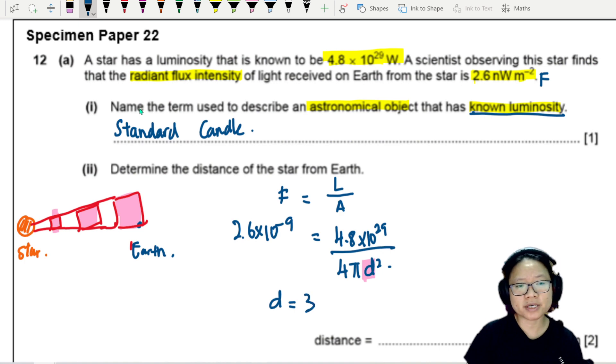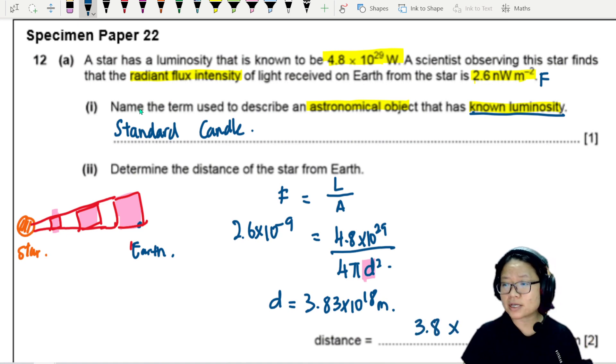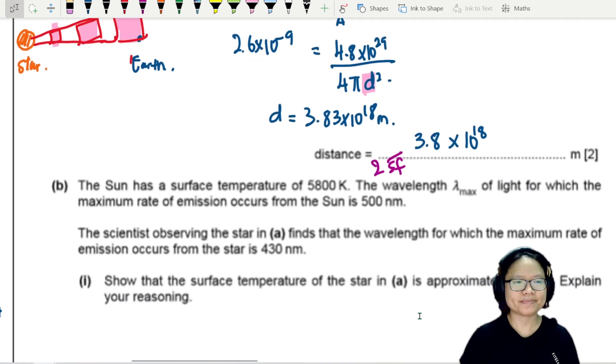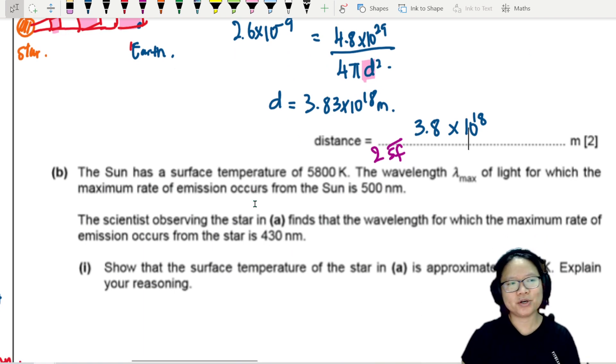Solve the equation by finding d. If I press my calculator, this is 3.83 times 10 to the power 18 meters. You would probably want to write this in two significant figures because all the values given here is 2SF. We will also write 2SF. Moving on.